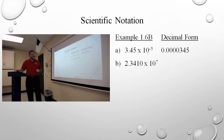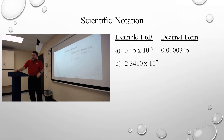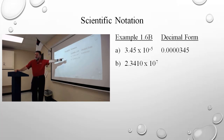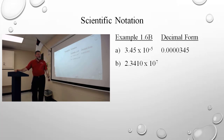2.3410 times ten to the seventh. I'm going to write every one of those digits down because every one of them is significant. Because in scientific notation, every digit is significant. All I have to do then is move the decimal seven places to the right. That's correct.